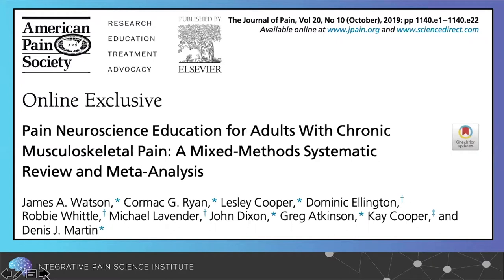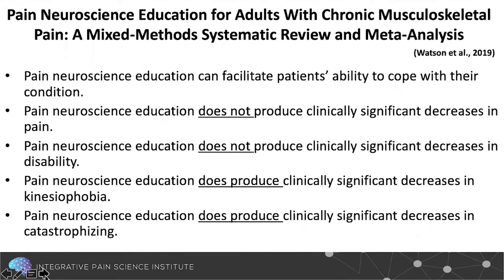A 2019 mixed method systematic review and meta-analysis from the American Pain Society Journal of Pain found that pain neuroscience education does not produce clinically significant decreases in pain or disability. However, it does produce significant decreases in kinesiophobia and pain catastrophizing. Those two outcomes are really important, because when you look at the processes of change — reappraisal of thoughts, negative thinking — fear of movement and pain catastrophizing are key moderators with regard to the persistence of pain.